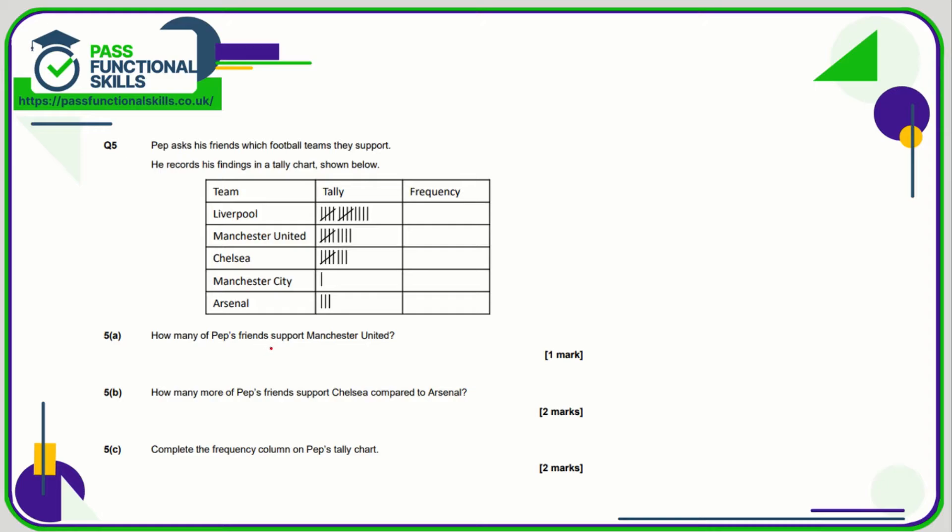How many of Pep's friends support Manchester United? Well, Manchester United is five plus four, so that is a nine. How many more of Pep's friends support Chelsea compared to Arsenal? Well, Chelsea is five, six, seven, eight. Arsenal is three. So how many more support Chelsea? That's eight take away five—three—which is five. And complete the frequency column. Well, we've done most of it already. Manchester City is one, and Liverpool is five, ten, plus another four, so that is fourteen.